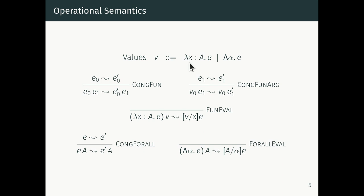We now have one more sort of value: in addition to lambda terms abstracting over term variables, we also have big-lambda expressions abstracting over type variables. We have to give an evaluation rule for these as well. If e steps to e-prime then e A steps to e-prime A — that's the congruence rule for the for-all case. We don't need a second congruence rule because types don't evaluate. Once e is a value of the form big-lambda alpha dot e, we can substitute A for the type variable alpha in the body e.